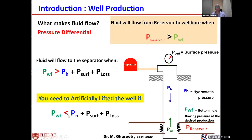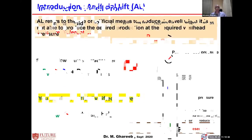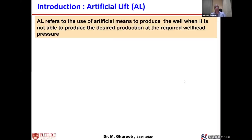When the bottom hole flow pressure becomes less than the hydrostatic head, surface pressure, and pressure losses, you need artificial lift. Sometimes if surface pressure increases, if the flow line pressure increases, if you have a problem in the flow line, or if fluid properties change — for example, at initial life of the well you produce only oil, but water cut starts to increase — the hydrostatic pressure increases because the average specific gravity of the fluid increases.